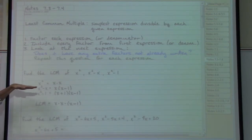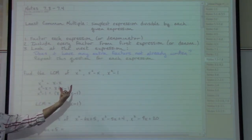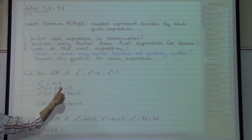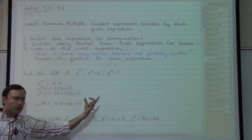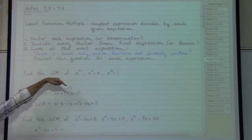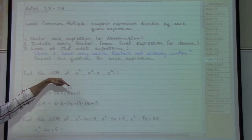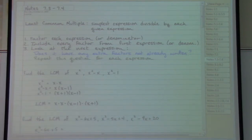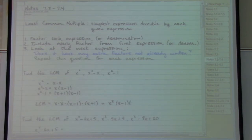We move to the third expression, look at the factored version, and ask that question again. Do we have any factors that haven't been written down yet? We have not written down an x plus one, so we include that in our least common multiple, our least common denominator. We do already have an x minus one that appears, so we do not need to put in an extra one of those. This is the long version of our answer. A shorter version would be to write x squared, followed by x minus one, x plus one.